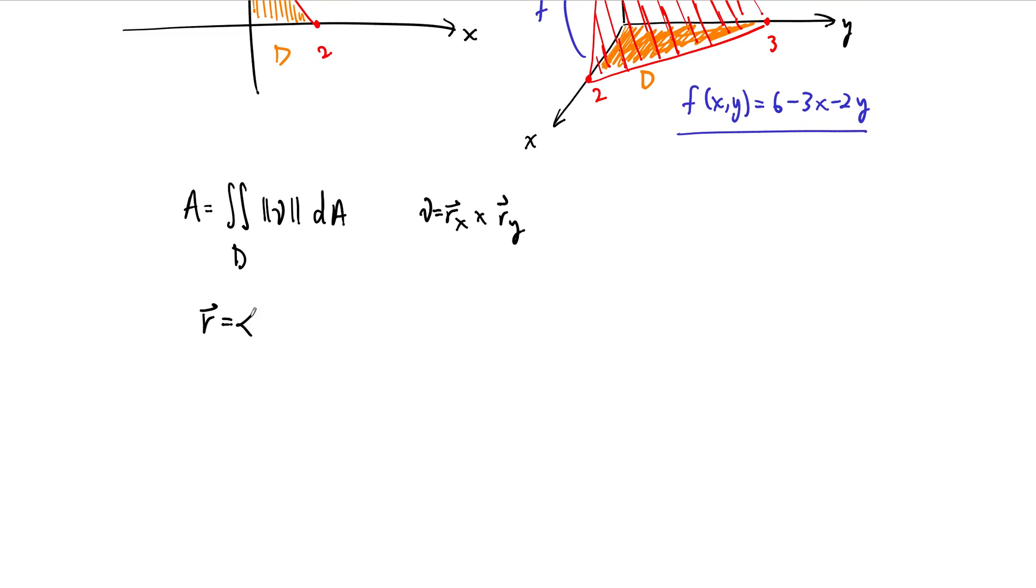Because this thing is a plane, it's going to turn out to be very nice. So remember, our parametrization is x, y, 6 minus 3x minus 2y. We need to compute the partial derivatives. Partial derivative of x is 1 with respect to x, y dx is 0, and the x derivative of this whole term is just negative 3. Same thing here. So y derivative is 0, 1, and then negative 2.